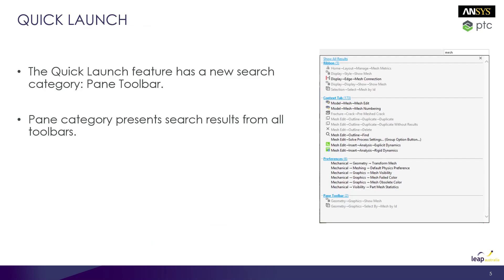The quick launch feature in the new user interface is something I find to be extremely useful. Especially if you're trying to get around the new user interface and locate things, just searching for what you'd like will give you the path and location where you could launch it, and you could directly click on it to get the desired action. As part of this release, you also get results from the pane toolbar as part of the search feature.